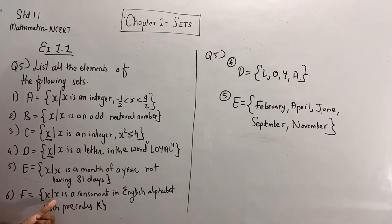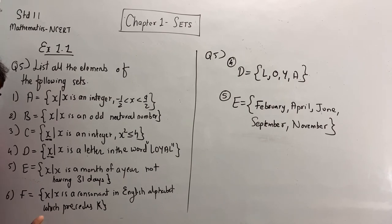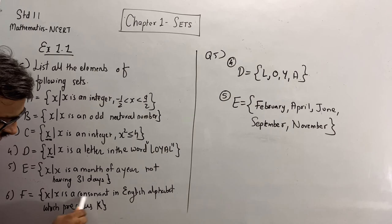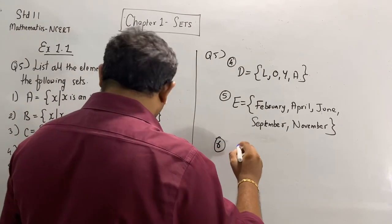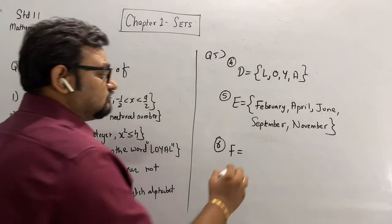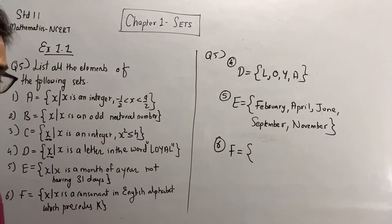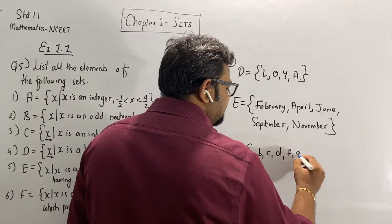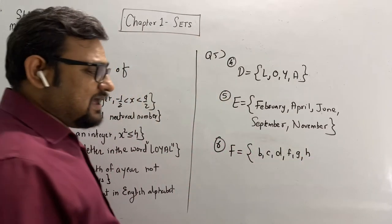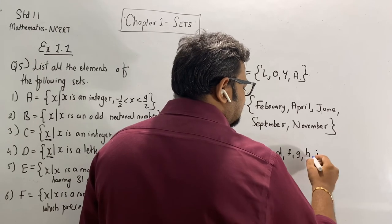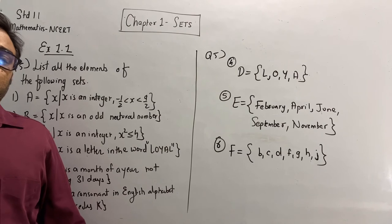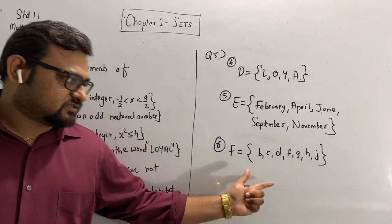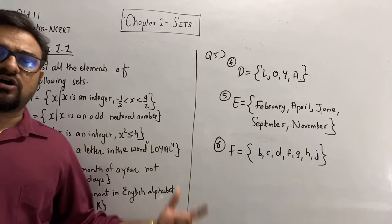The sixth part: {x such that x is a consonant of the English alphabet which precedes K}. 'Precedes' means 'comes before.' All alphabets before K that are consonants: A is a vowel, so skip; B, C, D — then E is a vowel; F, G, H — then I is a vowel; J. K is not included since we need letters before K. So F = {B, C, D, F, G, H, J}.